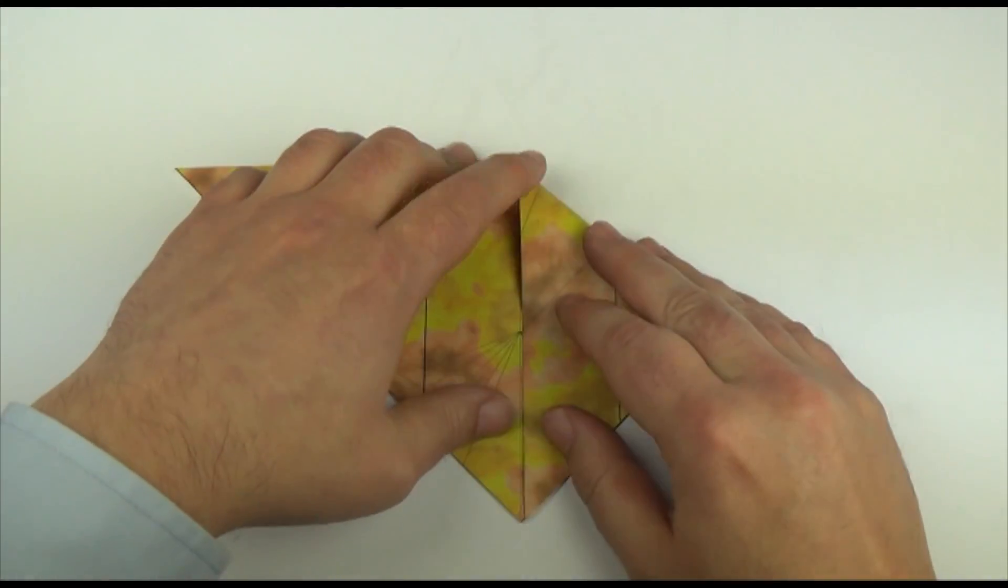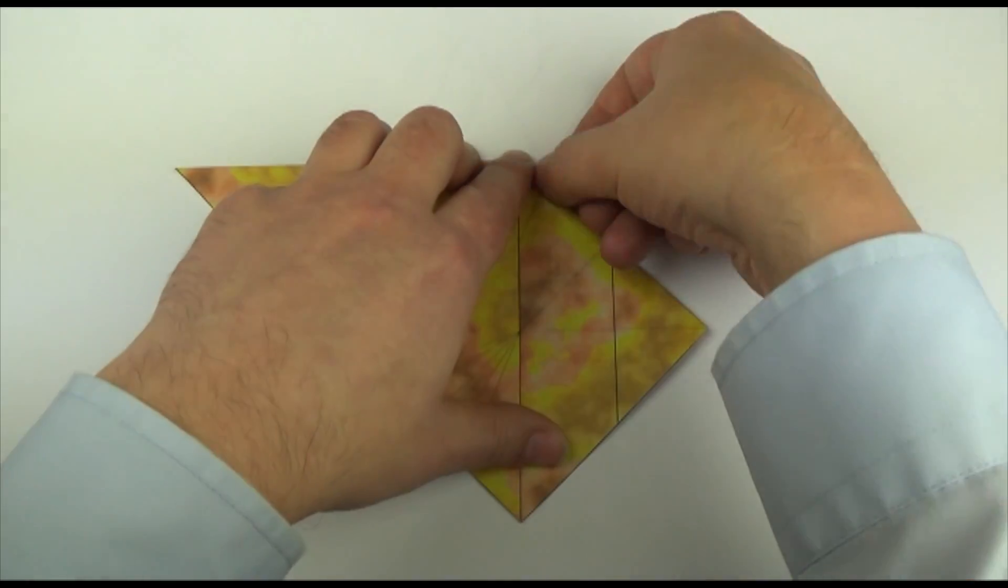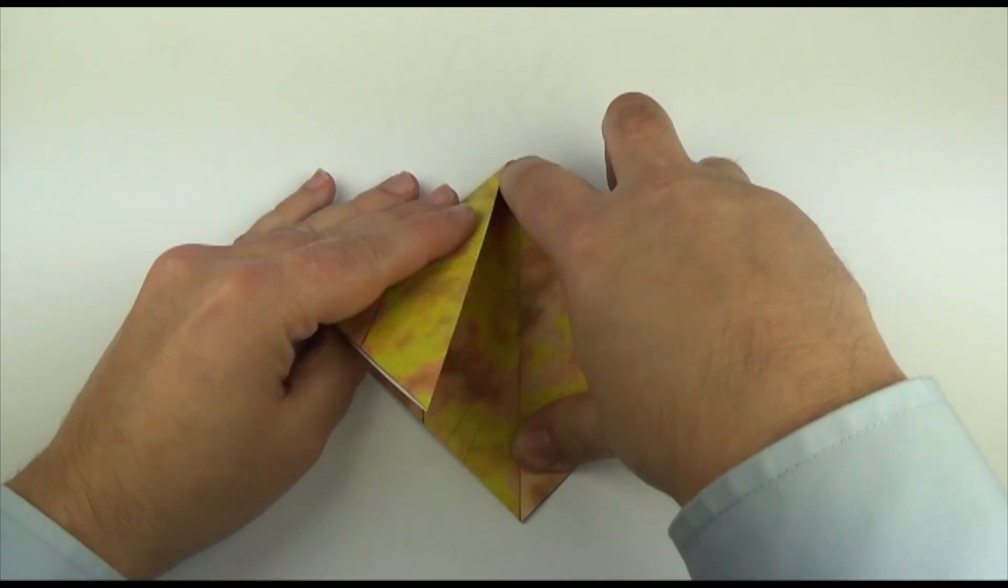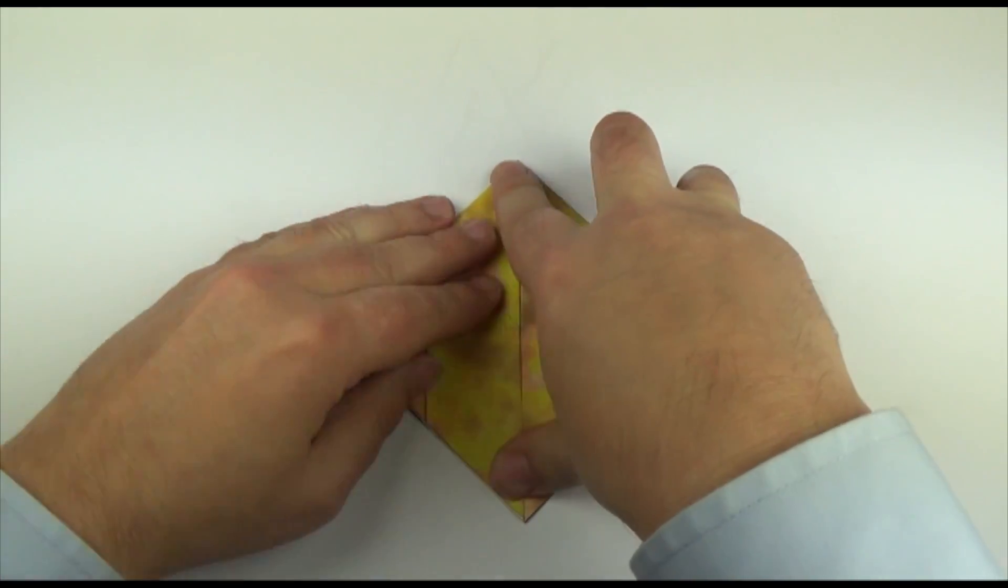Now take the corners, and fold them down, making 45 degree folds on both sides, and crease.